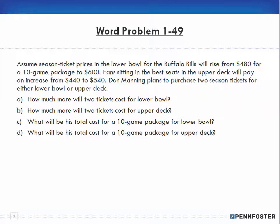I'm just going to start working these problems and speak out loud so that you understand what's going on through my head as I work through the word problems. The question says assume season ticket prices in the lower bowl for the Buffalo Bills will rise from $480 for a 10-game package to $600. In the back of my head immediately I went and said okay 600 minus 480, so that's going to have a price increase of $120 over the 10-game package.